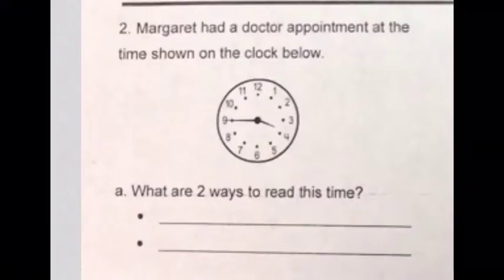Now remember, with time we always start with the short hand and the short word is hour. So if you look at the short hand, the hour hand, it is between the three and the four. It has not passed the four yet. It's getting really close, but since it's not at the four or past the four, it's still three.